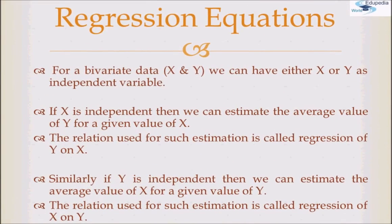Coming to regression equations for bivariate data — that is, when we have two variables x and y — either x or y would be dependent and the other would be independent. We basically have two regression equations. If x is independent, we can estimate the average value of y for a given value of x; the relation used for such estimation is called regression of y on x.